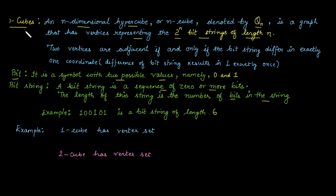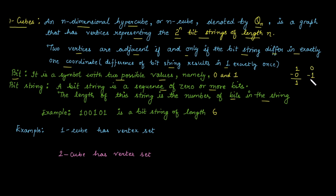Returning to the n-cube: it has 2 raised to power n vertices, where vertices are represented as bit strings of length n. Two vertices are adjacent if and only if their bit strings differ in exactly one coordinate — equivalently, when you take the bitwise difference, you get exactly one 1. Note that 1 minus 0 and 0 minus 1 both give 1, so the difference is always positive; it is never negative 1.